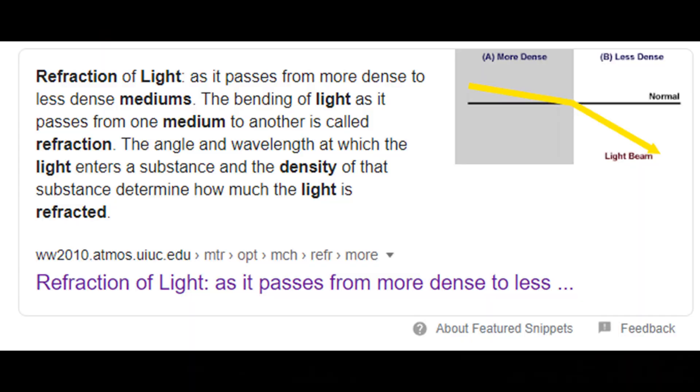Refraction of light: as it passes from more dense to less dense mediums, the bending of light as it passes from one medium to another is called refraction. The angle and wavelength at which the light enters a substance and the density of that substance determine how much the light is refracted.